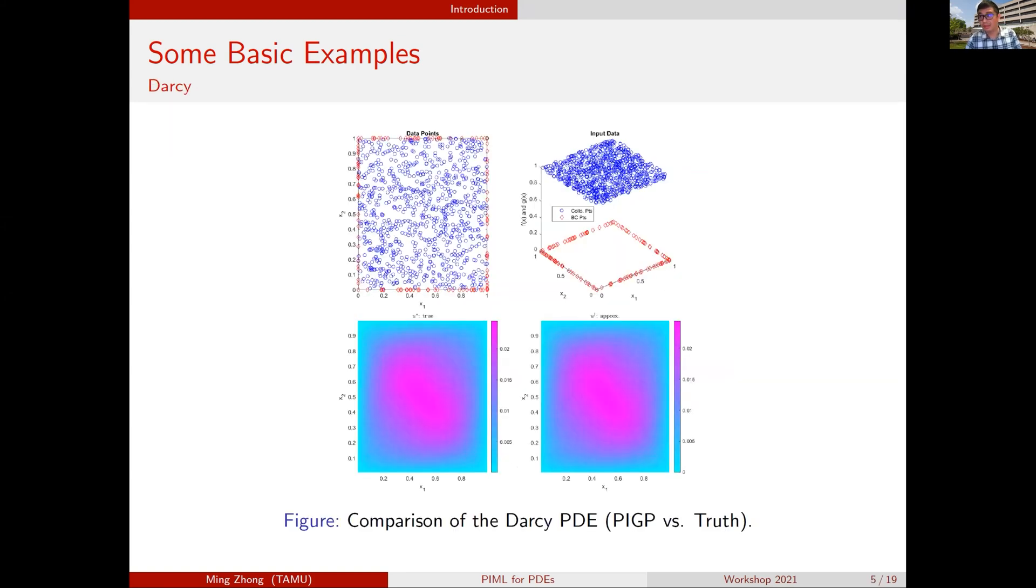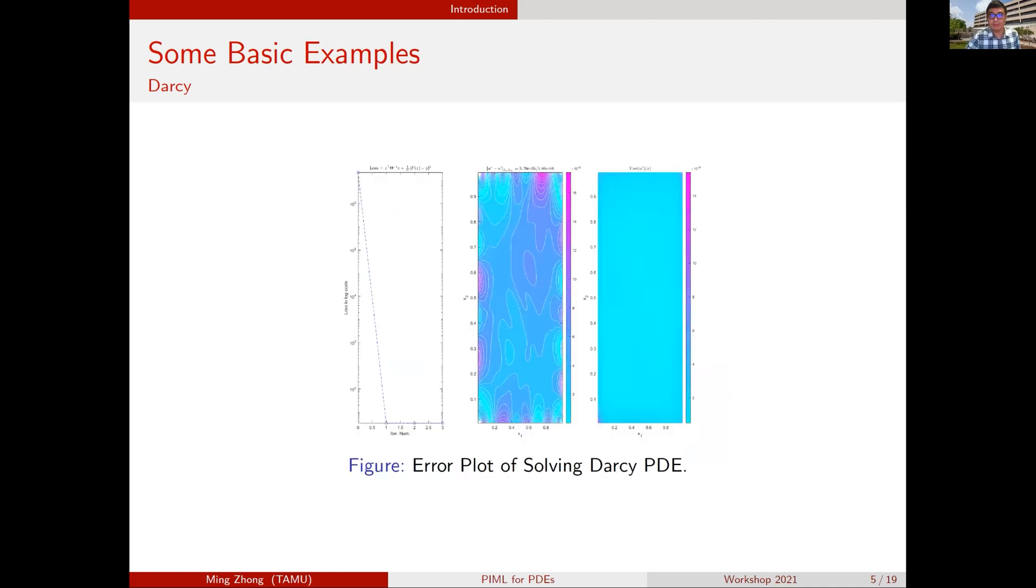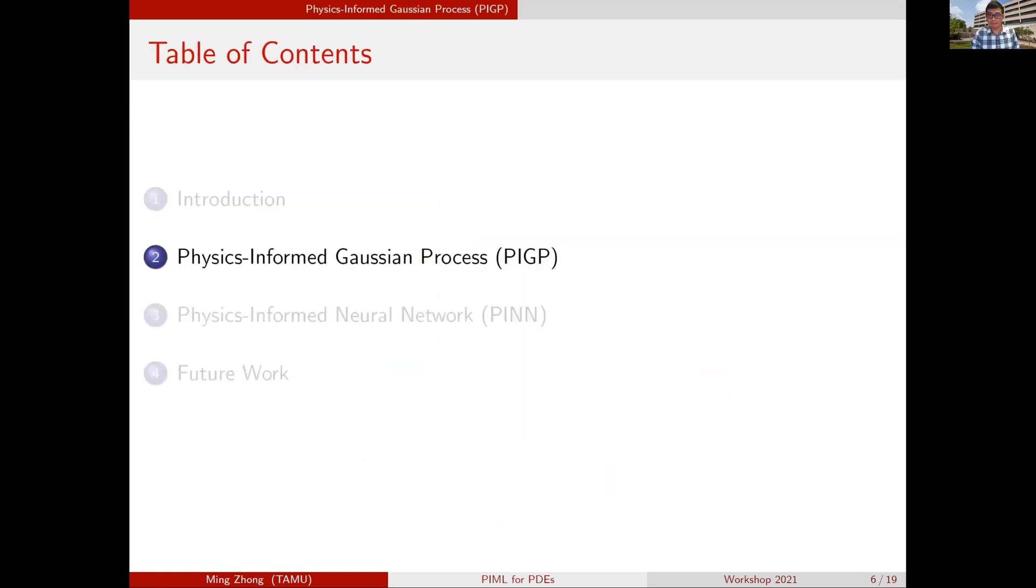You can also solve Darcy's equation, a linear PDE in divergence form. If you have the permeability coefficient being so rough, so highly oscillatory, traditional numerical methods will have trouble solving it. But if you fit it to a physically informed Gaussian process, you can solve it pretty easily and maintain a lot higher accuracy. Those are two toy examples we tried with physically informed Gaussian process.